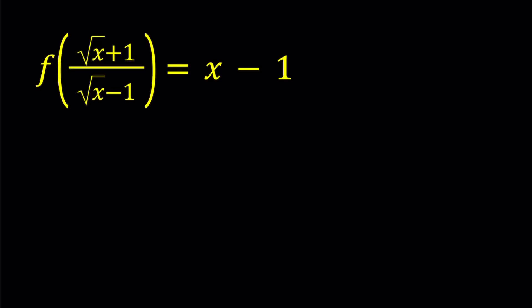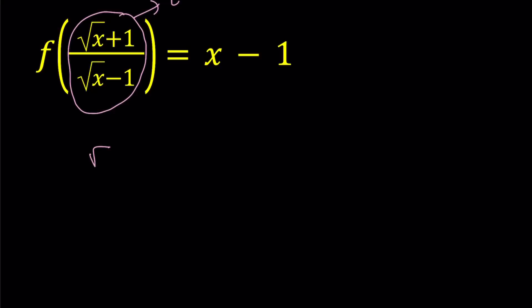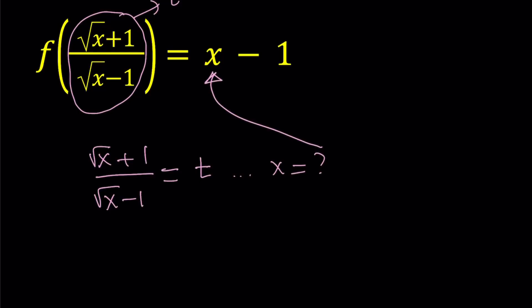Anyways, let's go ahead and see how we can find f of x from here. We're not going to find f of x first — we're going to find f of something else, but then it's easy to turn into f of x. So now I'm going to call this whole gigantic expression t. We'll set square root of x plus 1 over square root of x minus 1 equal to t. My goal is to solve for x in terms of t, and then substitute that back in.